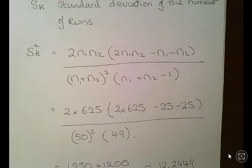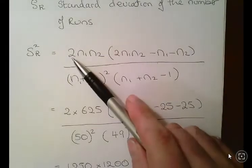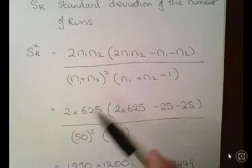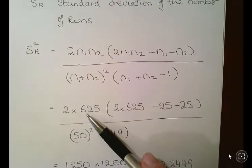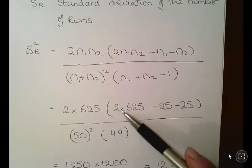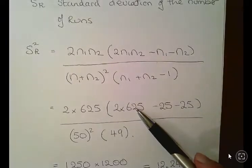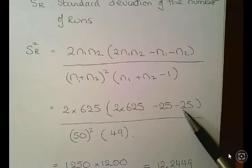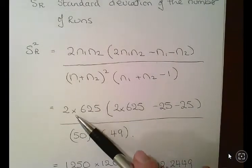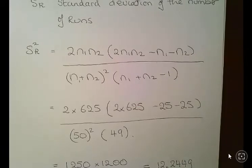So essentially it helps that actually I picked out 25 there and 25 because it hopefully will make the calculations easier to follow. So 2 times N1 times N2 is 2 times 25 times 25 which is 2 times 625, and then we have 2 times 625 there as well minus N1 minus N2, so minus 25 minus 25. That will actually work out to be 1250 times 1200.